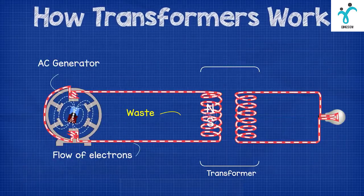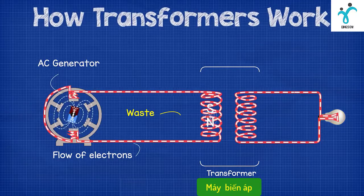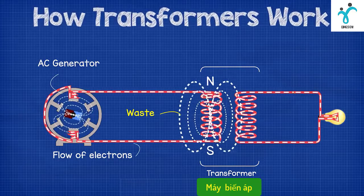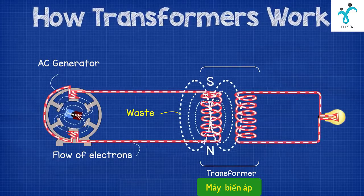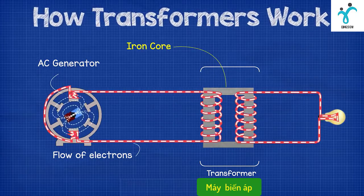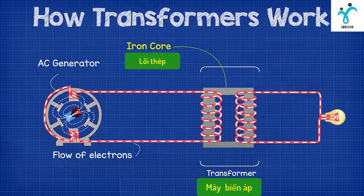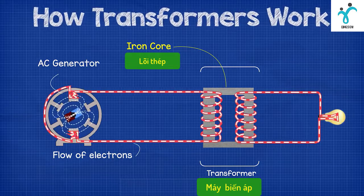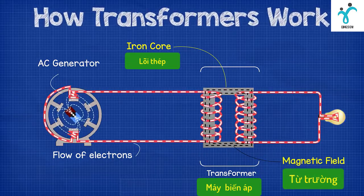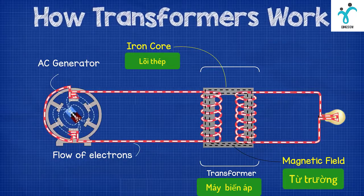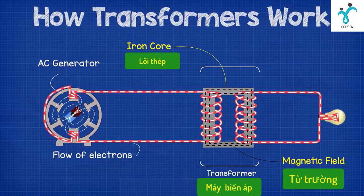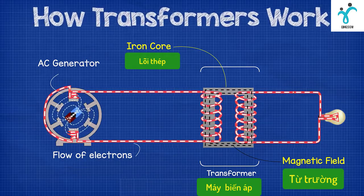Now the problem with this setup is that a lot of the magnetic field from the primary side is being wasted because it's not in range of the secondary coil. To fix this, engineers place a core of ferromagnetic material such as iron in a loop between the primary and secondary coils. This loop guides the magnetic field along a path to the secondary coil so that they will share the magnetic field, and this makes the transformer much more efficient.